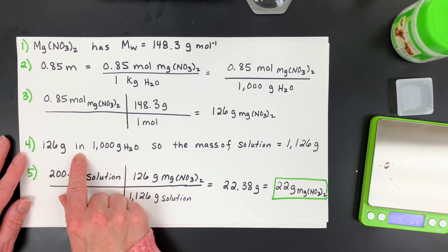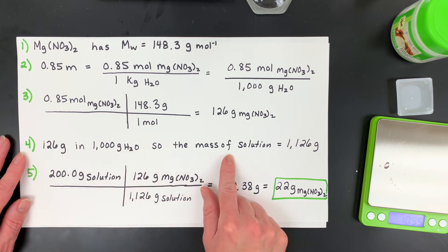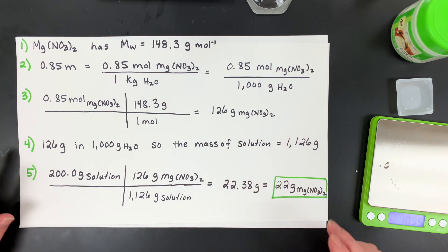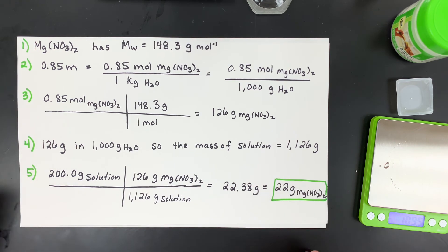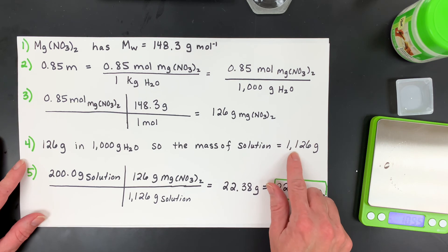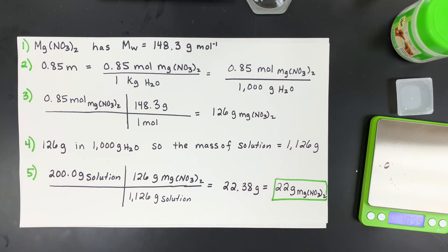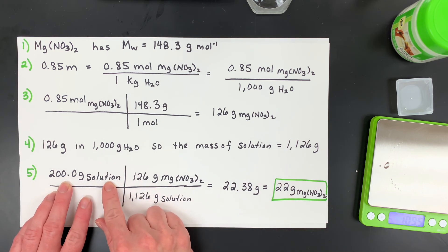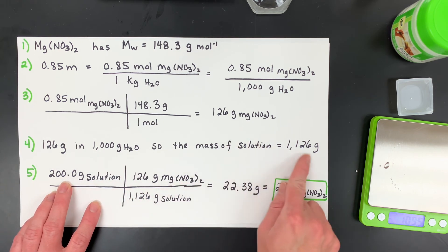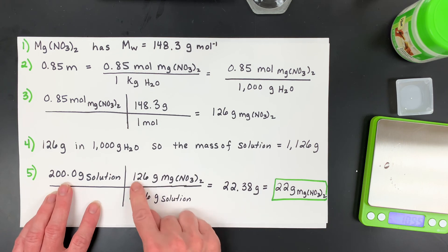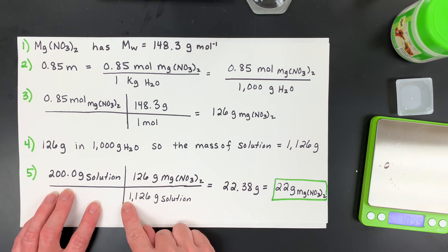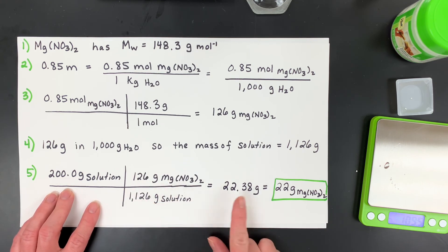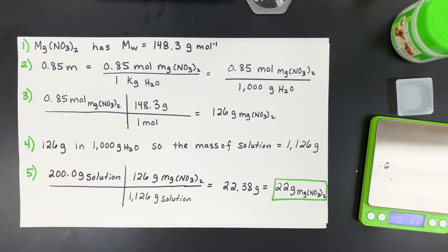So I kind of wrote a sentence here. If we have 126 grams in a thousand grams of water, the mass of that solution would be 1126. So then what I did was our question wanted to know if I made 200 grams or I had 200 grams of the whole solution. I then turned this into a little conversion factor that there'd be 126 in 1,126. And I found that the mass of that would be 22 grams of magnesium nitrate.